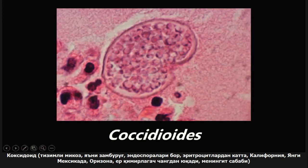A few other things about coccidioides: it can be diagnosed with a silver stain. With these systemic mycoses, one of the important things they usually give you in the question stem is the location and demographics to help narrow it down. The important one for coccidioides is going to be the southwestern United States.